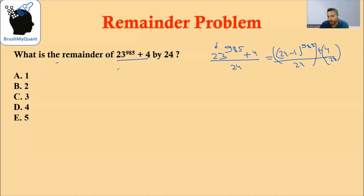If we expand this using the binomial theorem, there will be multiple terms. A lot of terms will have powers of 24, and there will be only one single term which will not have a power of 24.